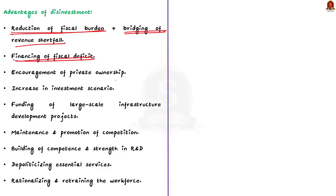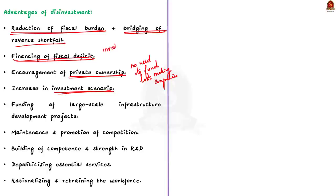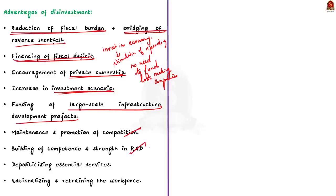Disinvestment indirectly increases the investment scenario in the economy to stimulate spending, and may also be used for funding large-scale infrastructure development projects. Indirect advantages include maintaining and promoting competition in the market, building competence, strengthening R&D, depoliticizing essential services, and rationalizing and retraining the workforce.